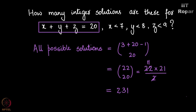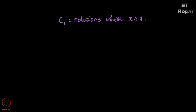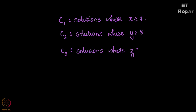Now this is all possible solutions of x plus y plus z equals 20, but we are over counting here and we must remove some. Let C1 be the condition for solutions where x is greater than or equal to 7, C2 for solutions where y is greater than or equal to 8, and C3 for solutions where z is greater than or equal to 9. We have to find n of C1-bar, C2-bar, C3-bar.